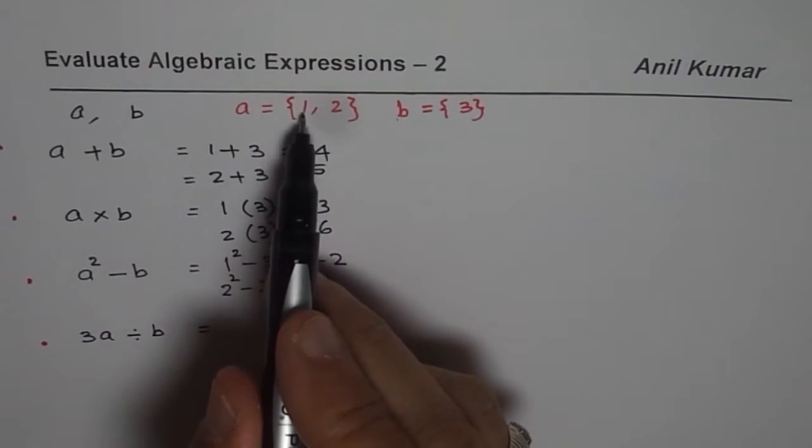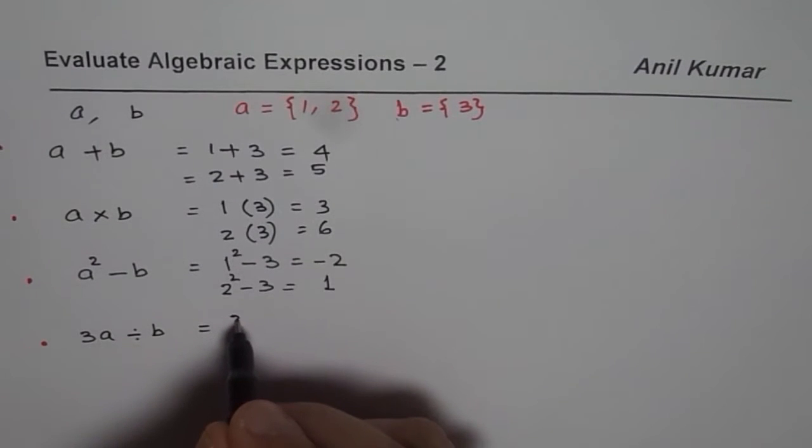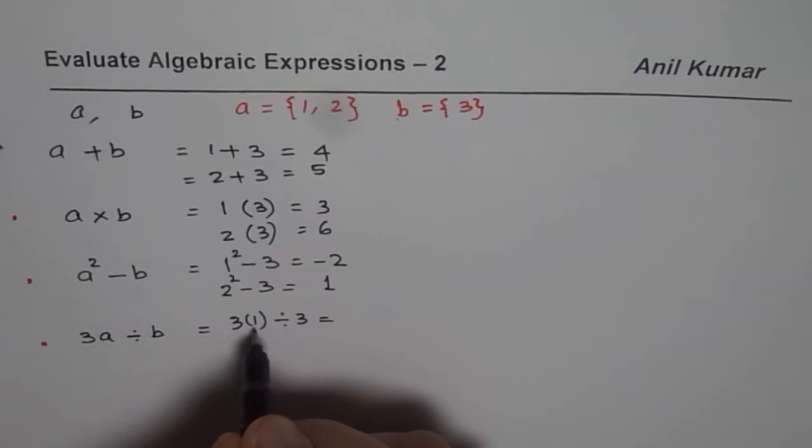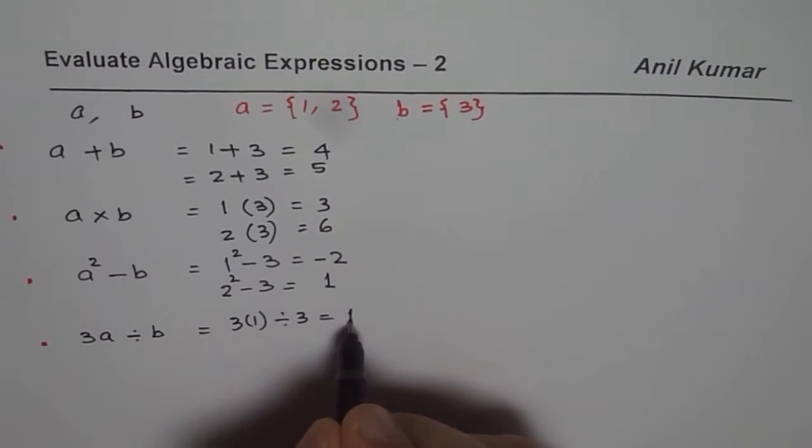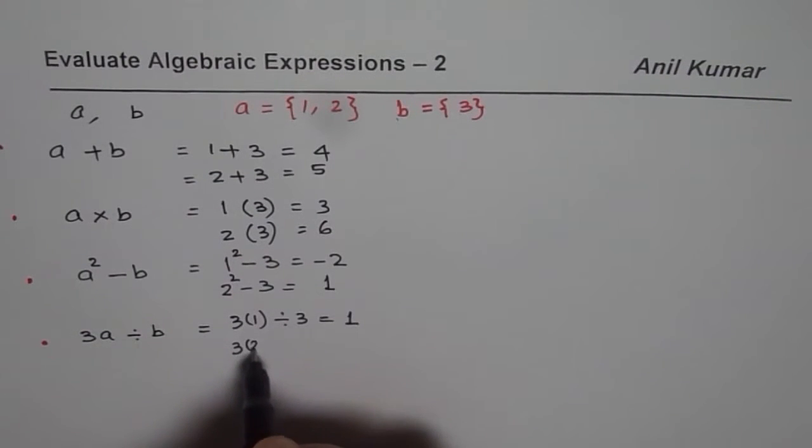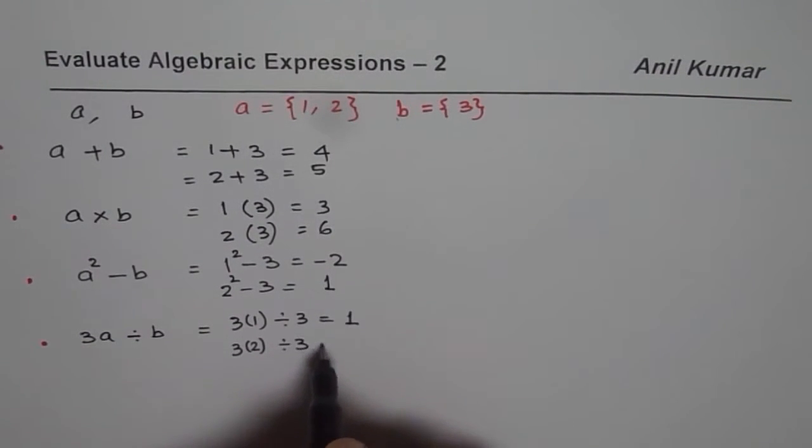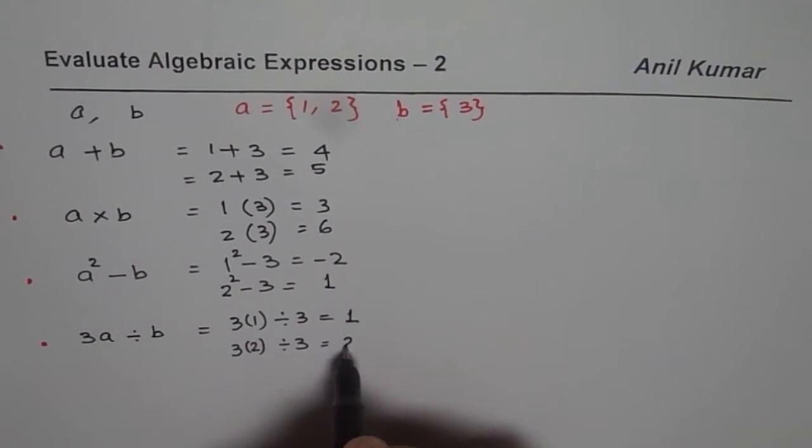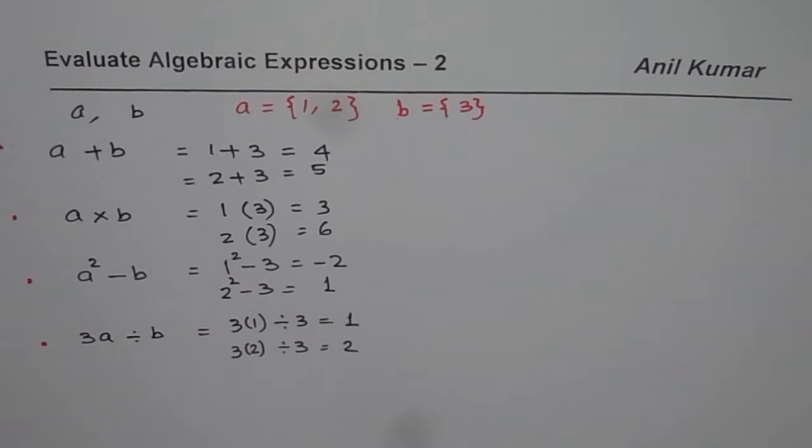First value is 1. So it would be 3 times 1 divided by 3. Now 3 times 1 is 3, that divided by 3 will give us 1. On the other hand, if I use 2 as A, so it becomes 3 times 2 divided by 3. 3 times 2 is 6, 6 divided by 3 is 2. So I hope you have understood the concept.